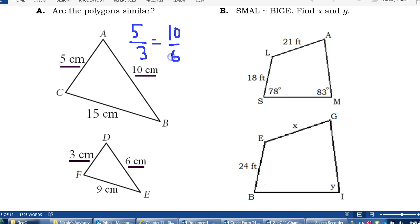And we'll use what we did in the previous lesson to check if this is a true proportion. I can do one of two things. I can do my cross products. 3 times 10, that's 30. And 5 times 6, that's 30. If those proportions come out true, then yes, these polygons are similar.